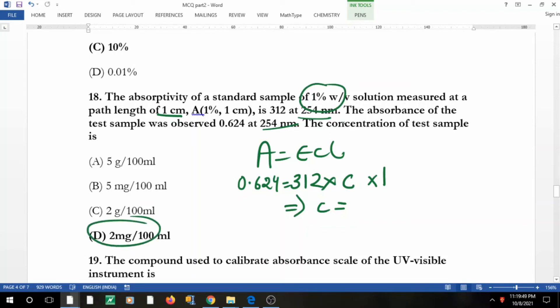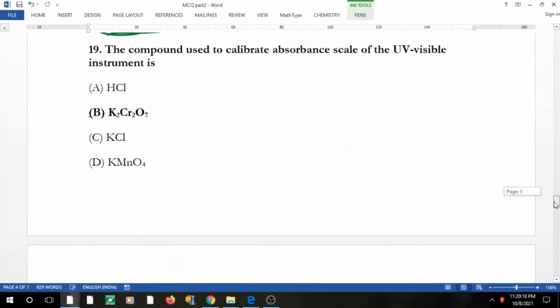But if you see here it is one percent weight by volume, and here it is written this. One percent is weight by volume, that means one gram in 100 ml, right? And what does that mean? That means 10 gram per liter. With the help of this, you will use this here, multiply by 10, and then you will get the answer as 0.002 gram, and when you convert it into milligram you will get this answer.